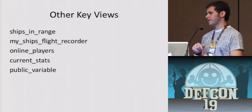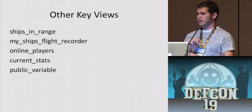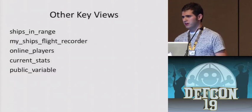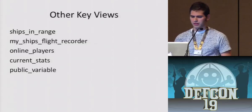Other key views: ships_in_range — you can't see other ships in the 'my ships' table because it's the my ships table, not everyone's. Using ships_in_range you can actually see other ships around you. The 'my ships flight recorder' is kind of neat but actually completely useless — but if you want to graph where all your ships went, it's kind of fun. There's also online_players. Current_stats gives you how many planets have been conquered, how many ships are in the system, how many players are online, how many are in the system — basically how much activity there is, so you can benchmark how you're doing. You can't really see much about how anyone else is doing, but you can see the overall stats.